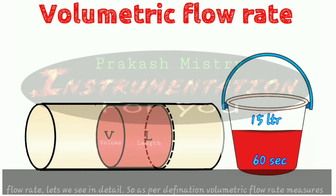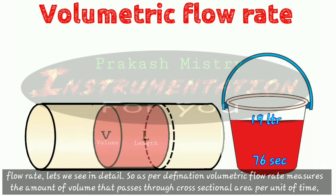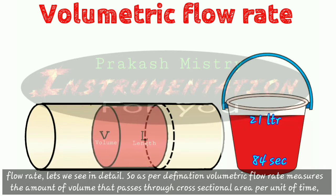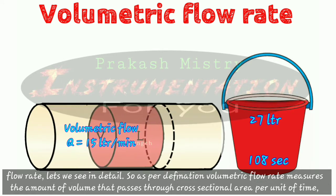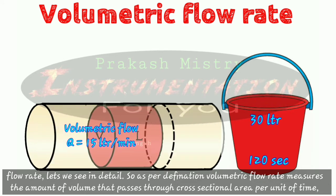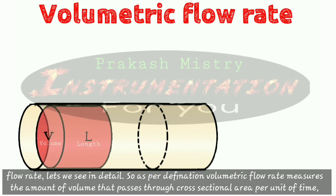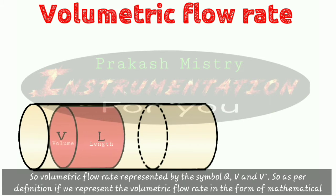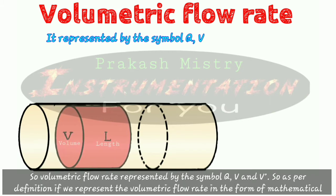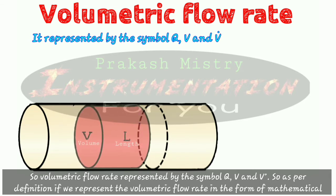So how can we calculate the volumetric flow rate? Let's see in detail. As per the definition, volumetric flow rate measures the amount of volume that passes through a cross section area per unit of time. The volumetric flow rate is represented by the symbols Q, V, and V-dot.